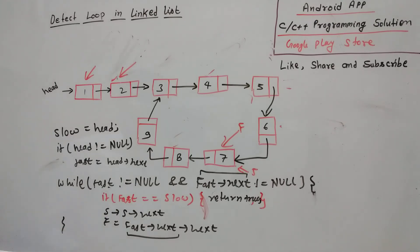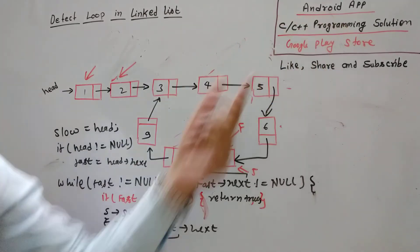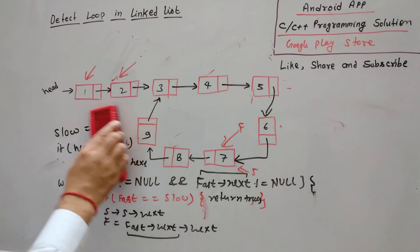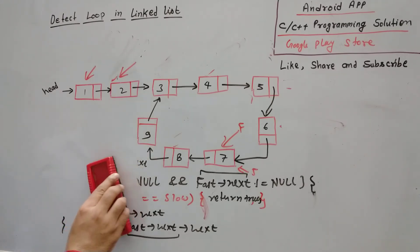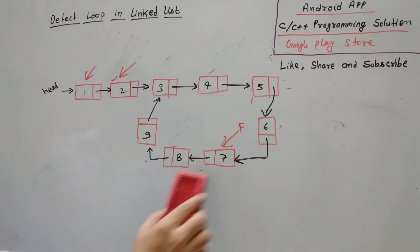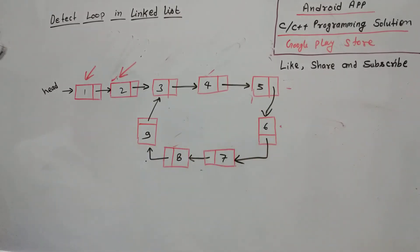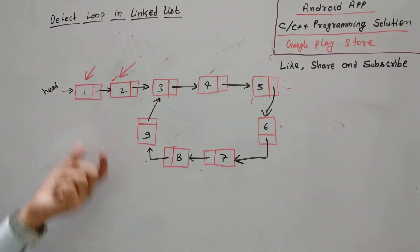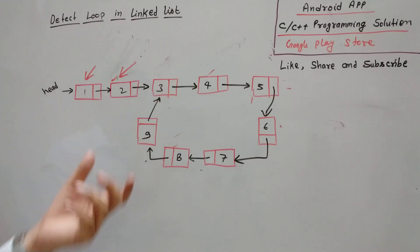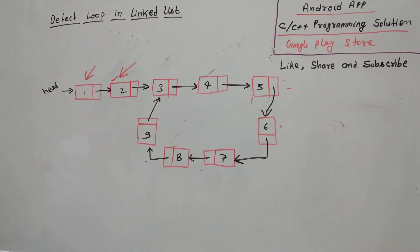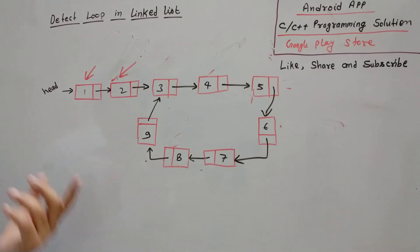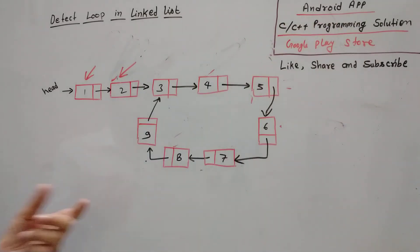You will get the full code in my C and C++ programming solution Android app, and you will also get the link in the description. This is the standard program which is frequently asked in interview questions and technical rounds. They may ask linked list related questions like how to reverse a linked list, how to find a loop, how to detect a loop, or how to merge two linked lists. You will get all these common interview problems in C and C++ programming under the placement tab.